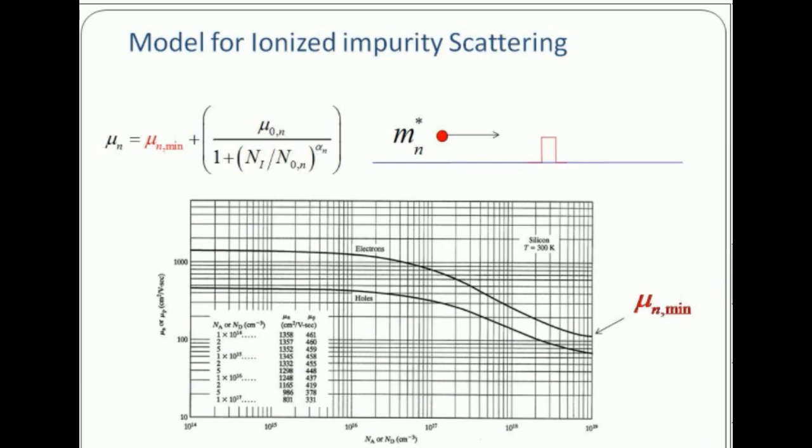Now as you make n_i smaller and smaller, in the limit of n_i equals zero, your final answer will be μ_minimum plus μ_naught. That will be a little bit more, so you can see the curve going up. In between there's a transition. The initial early part is completely phonon dominated—no ionized impurity. The later part is a combination of phonon and ionized impurity scattering.